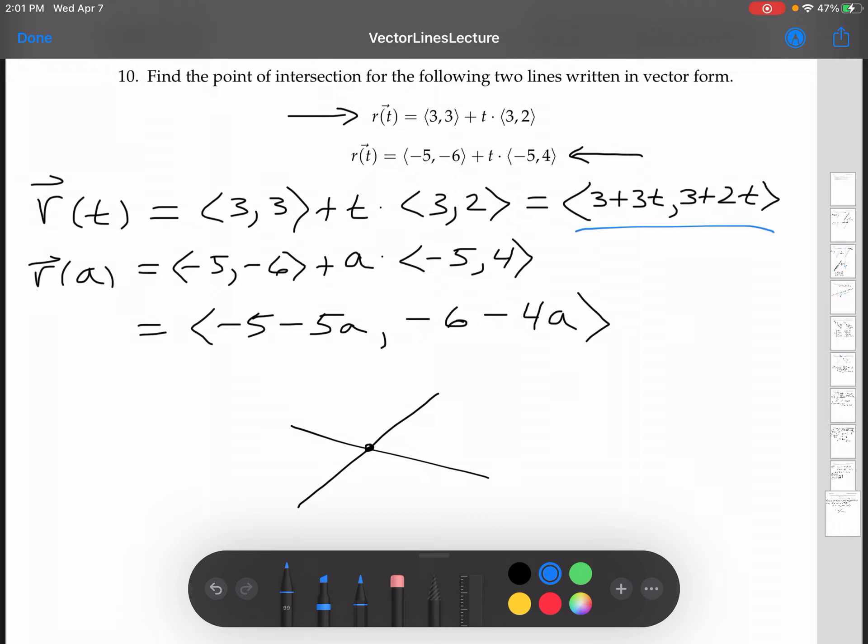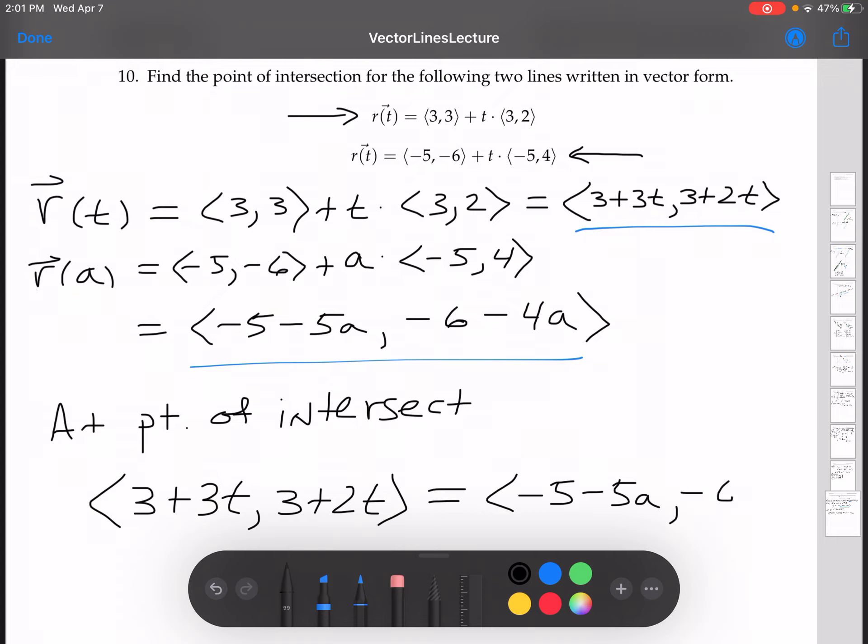So using these forms here, right, what do we know? Now, at the point of intersection, it must be, so I'll write that. At point of intersect, their x coordinates are the same, and their y coordinates are the same. So that means that 3 plus 3t, 3 plus 2t, must be equal to negative 5 minus 5a, negative 6 minus 4a. And that's the real conceptual piece of this problem. At the point of intersection, these vector lines, these vectors, must be pointing to the same point. And so that means they have the same components.